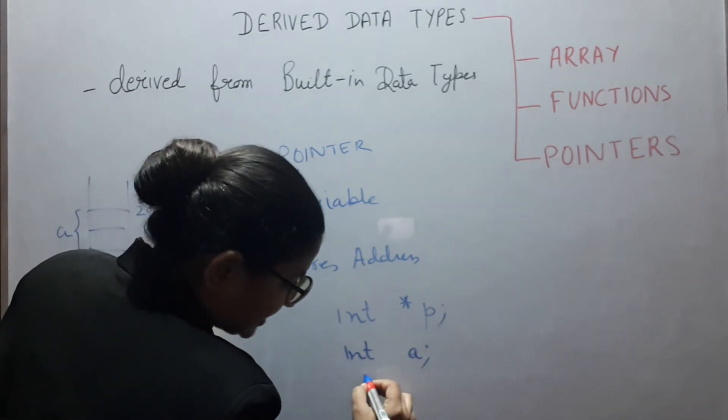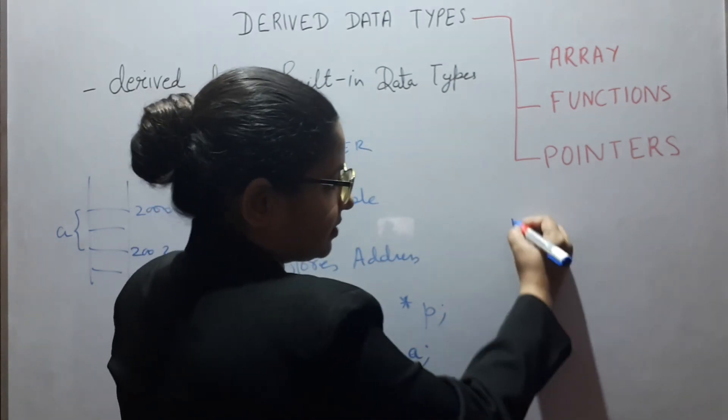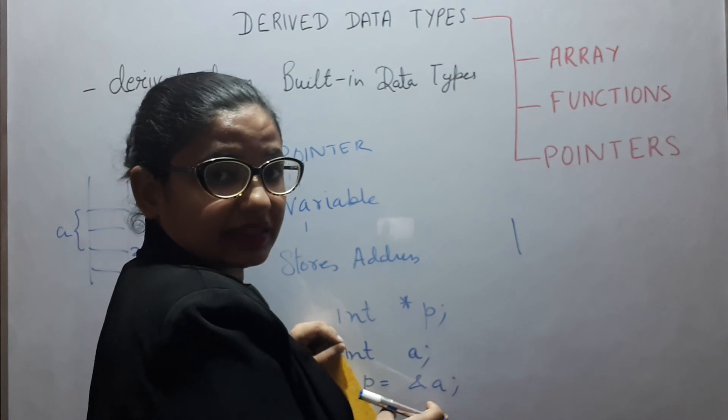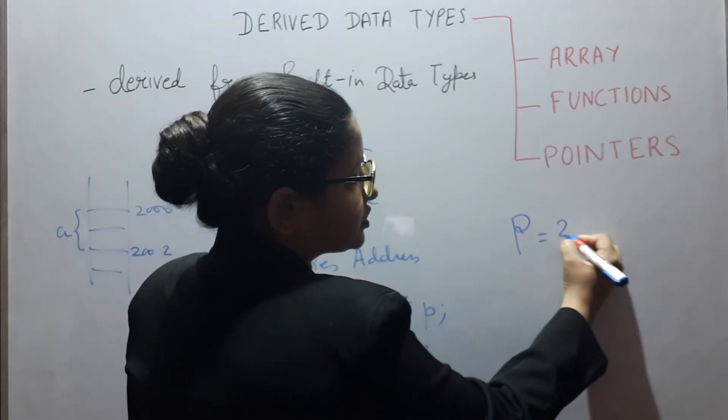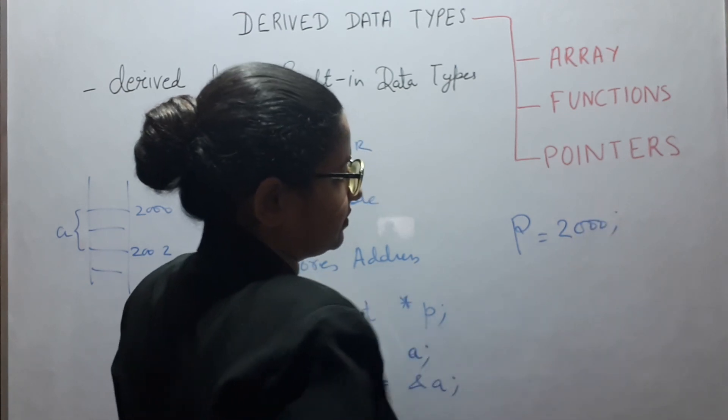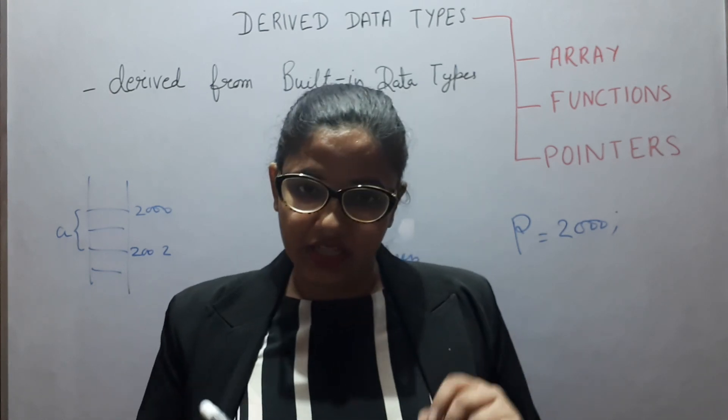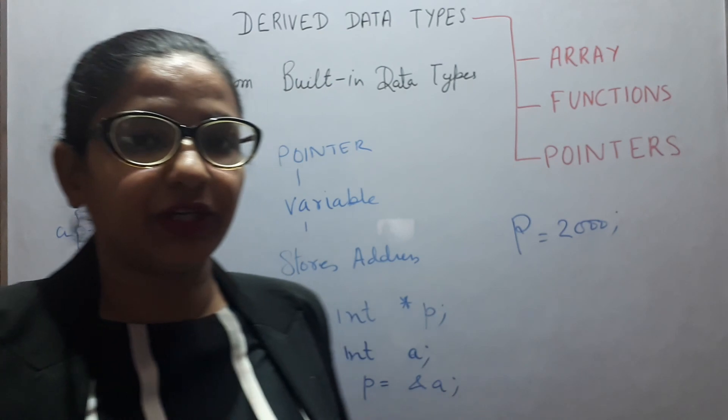So if I say P equals to &A, then what is this statement doing? This statement is making P equal to 2000. Because pointer is a variable that stores address. Thank you.